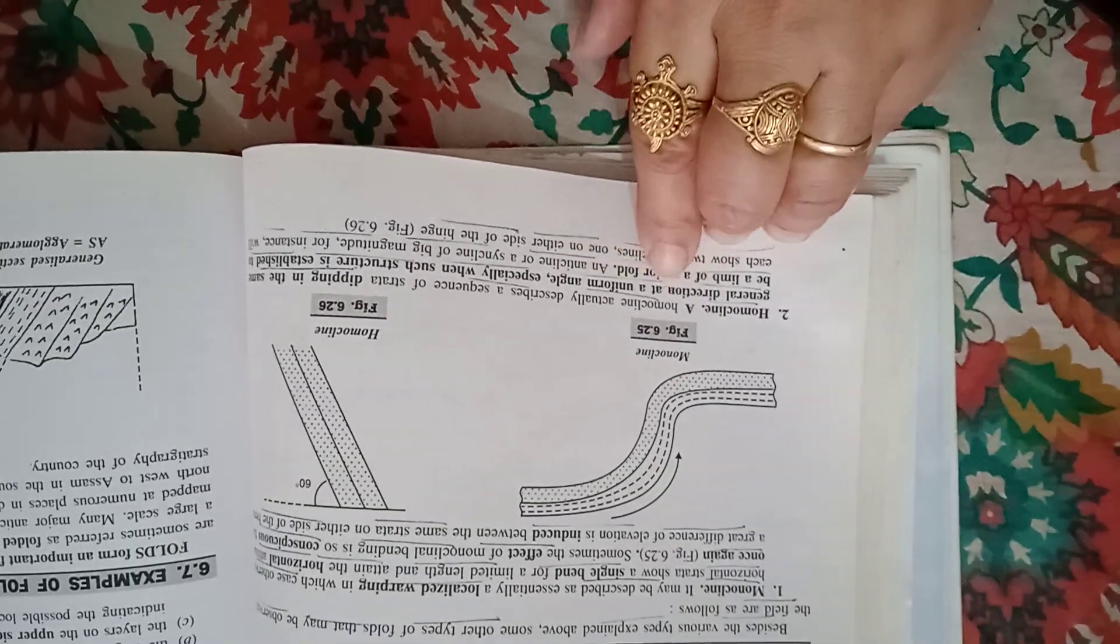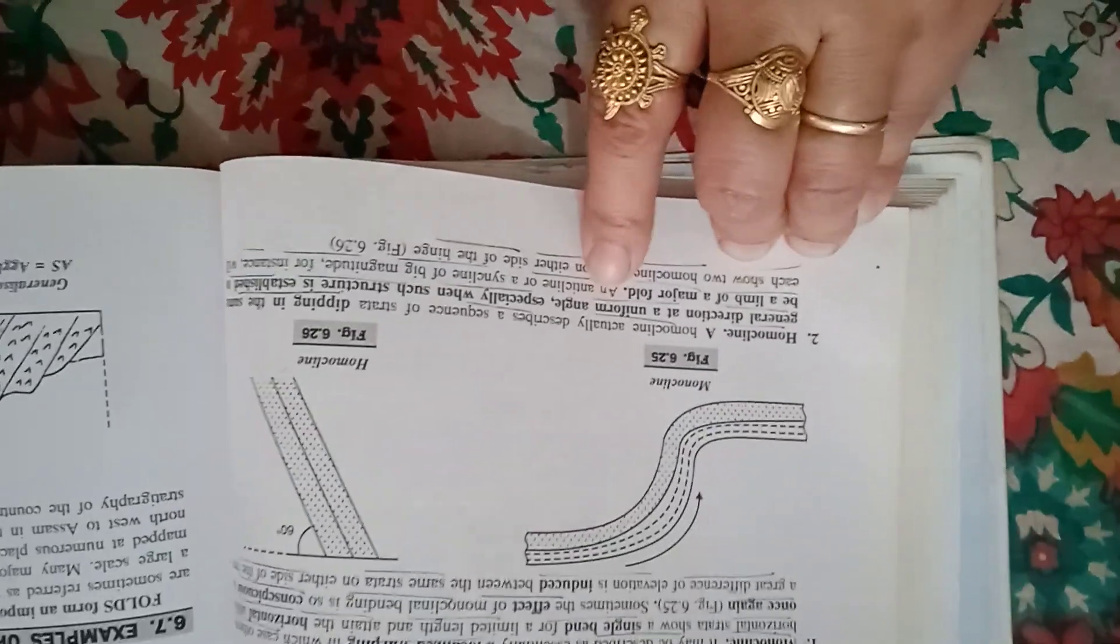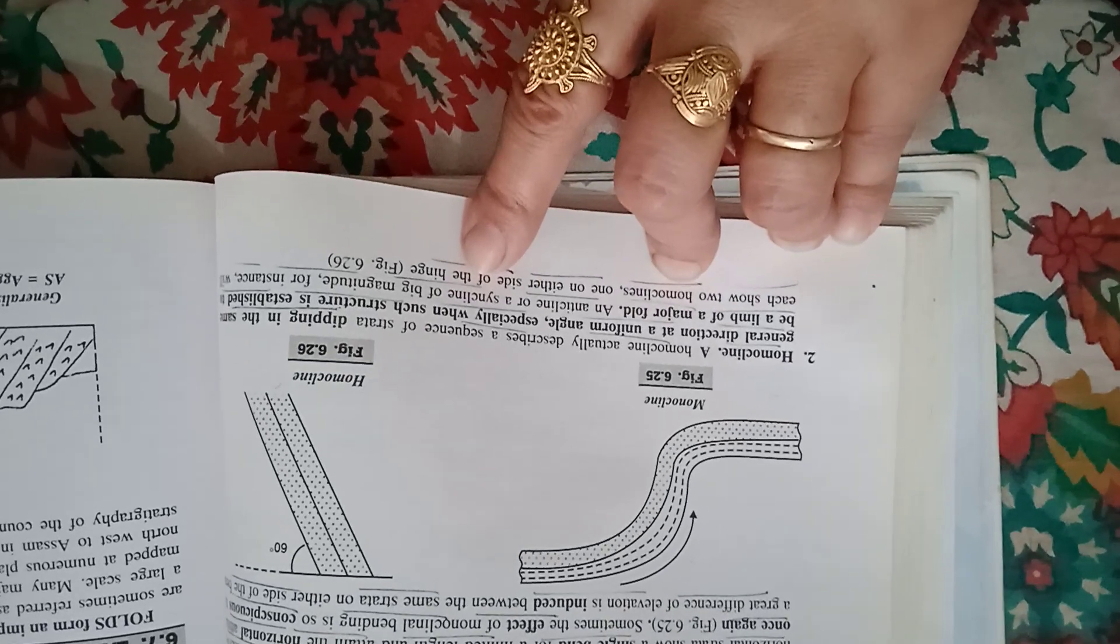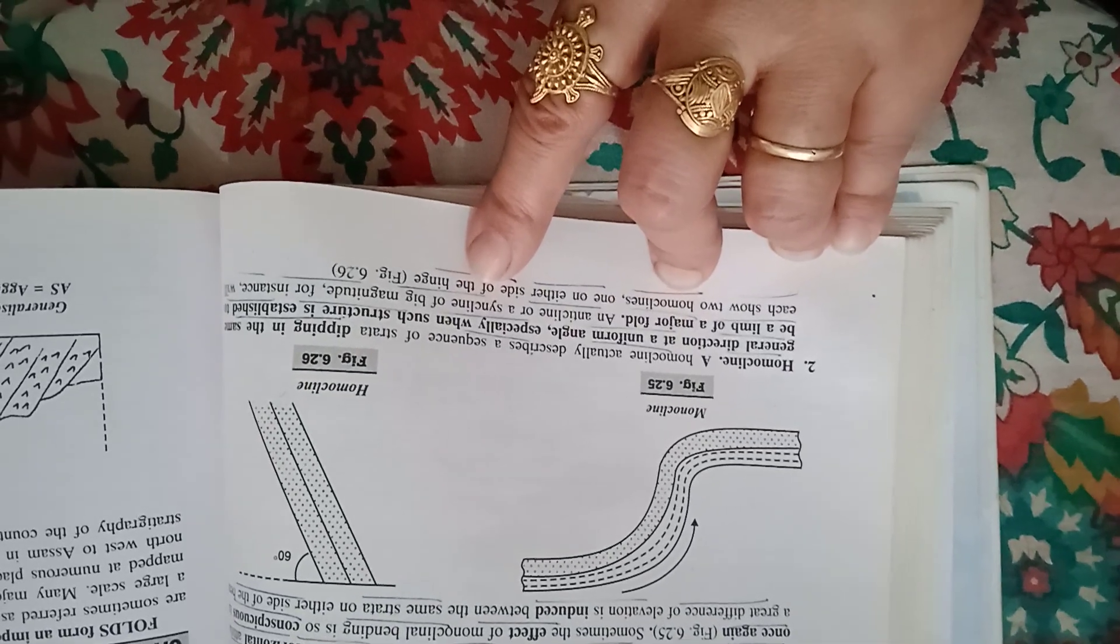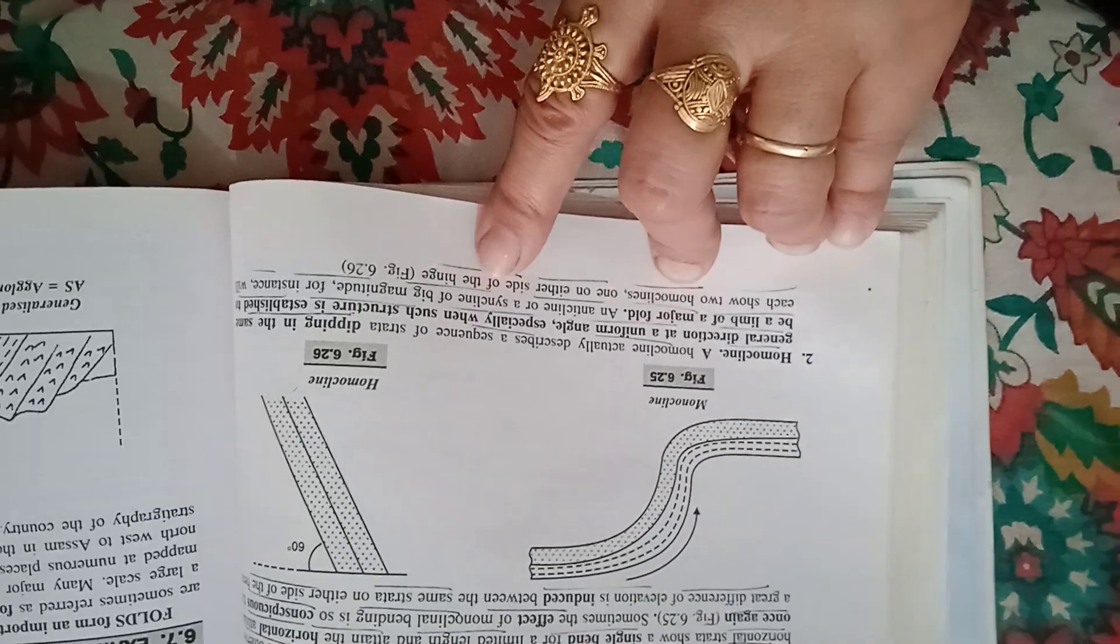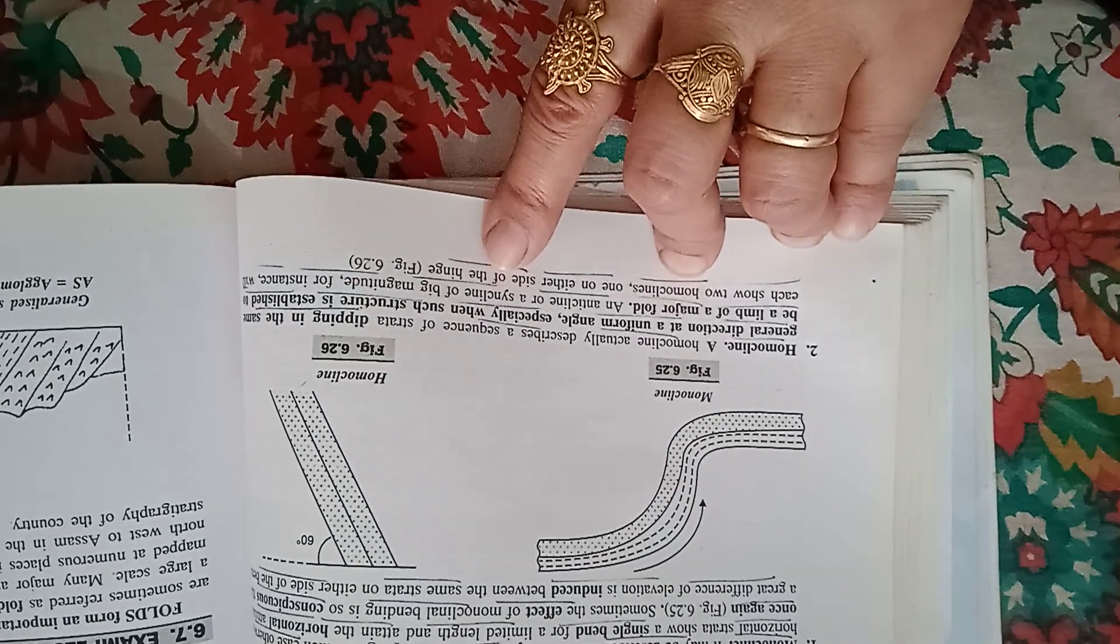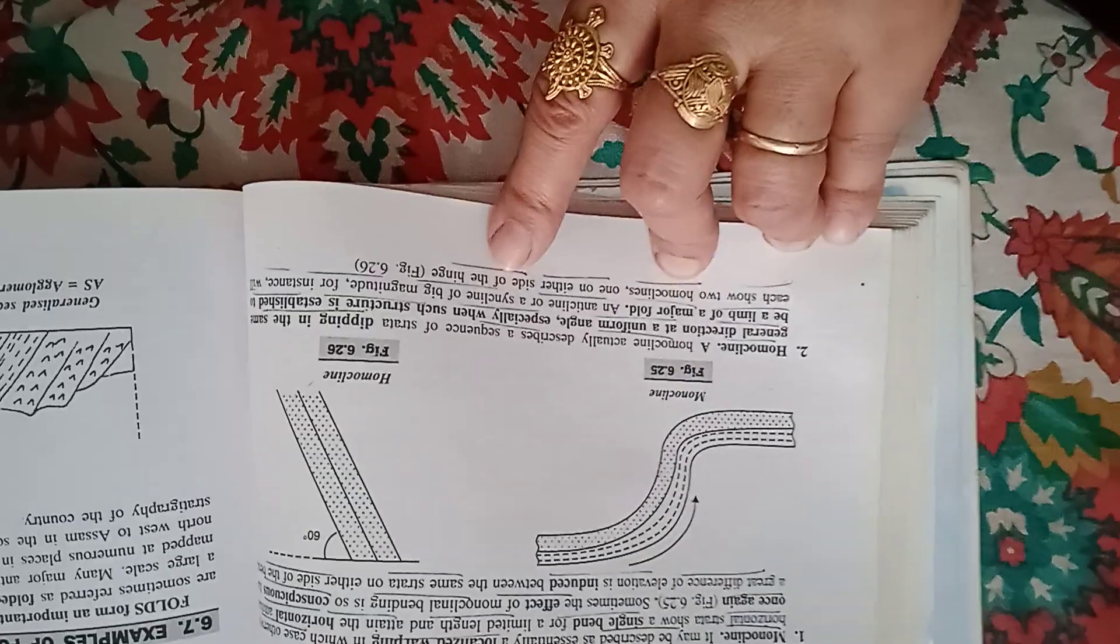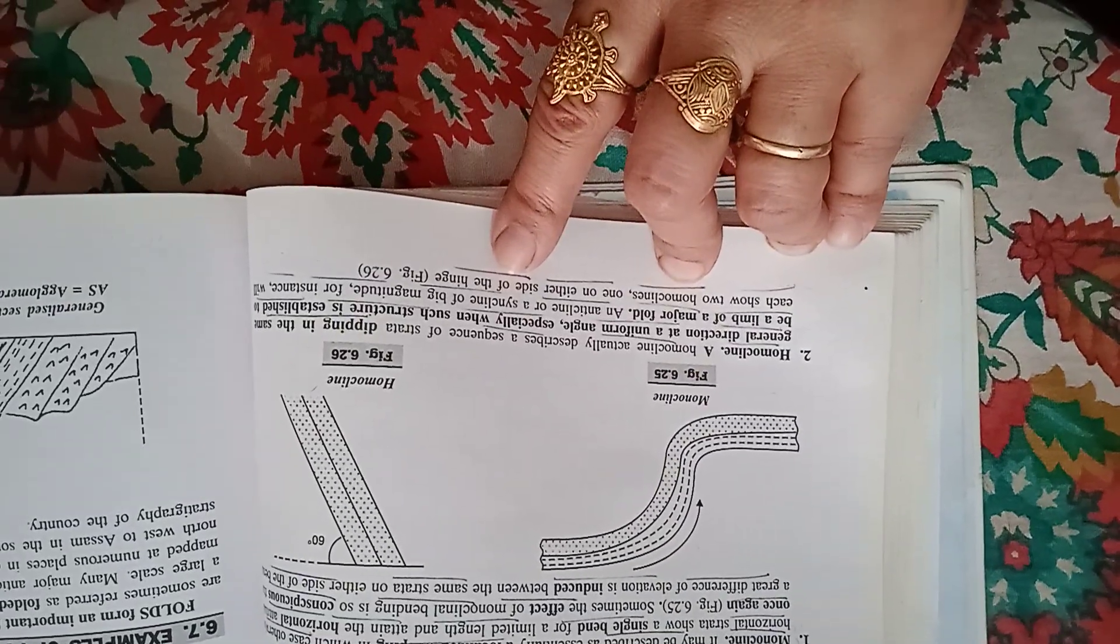Homoclines: a homocline describes a sequence of strata dipping in the same general direction at uniform angles, especially when such a structure is established to be the limb of a major fold, an anticline or syncline of bigger magnitude.